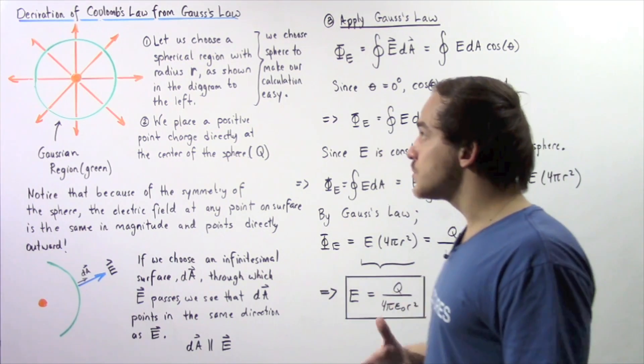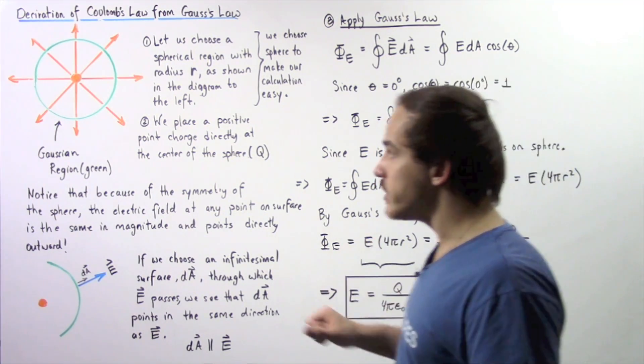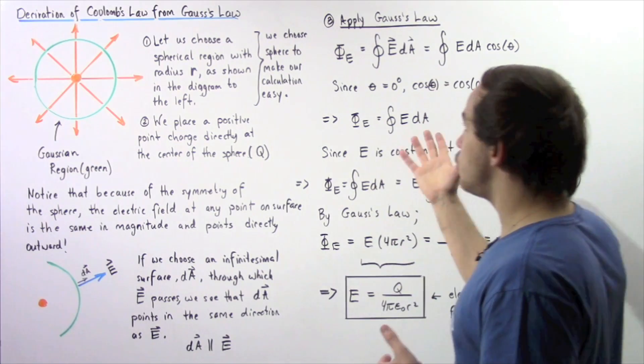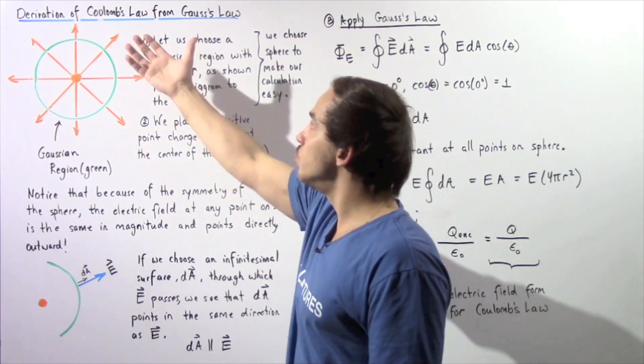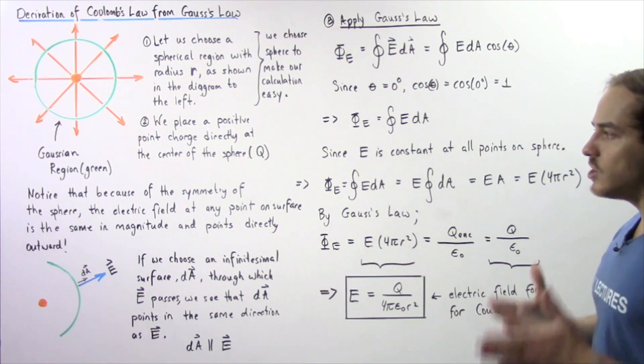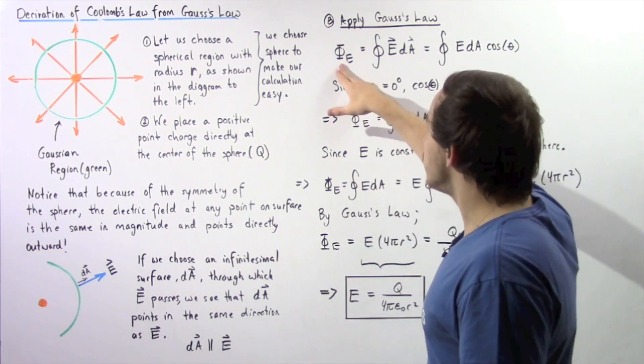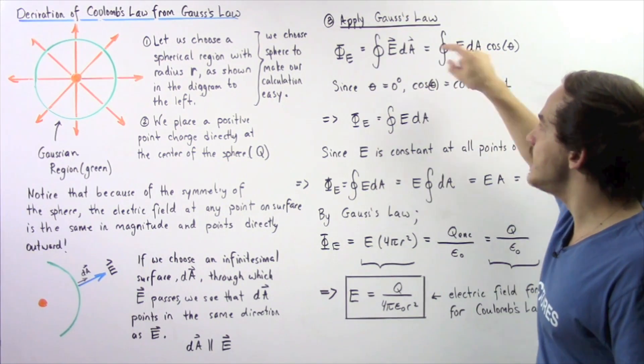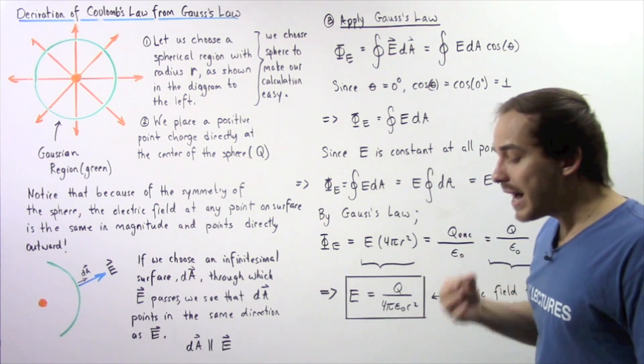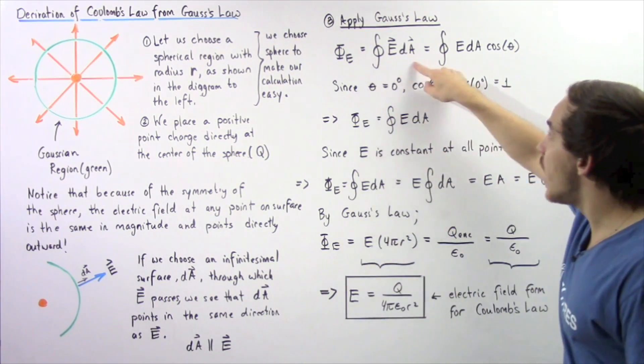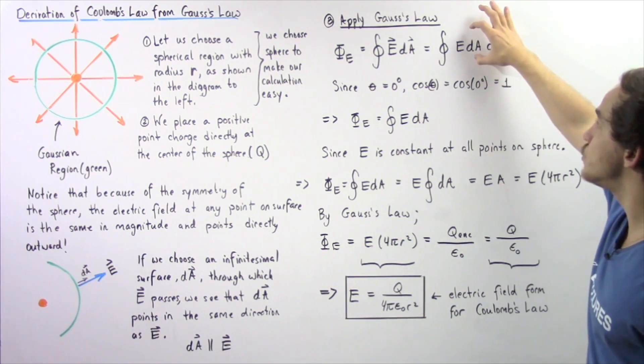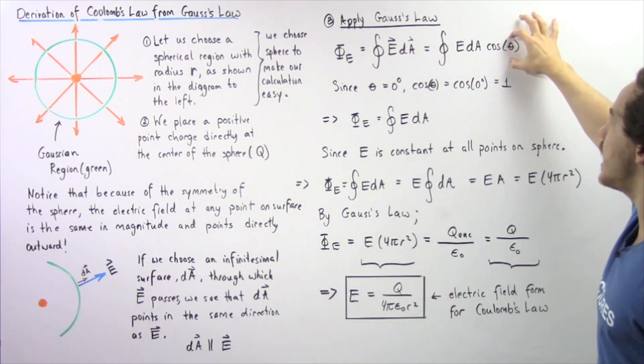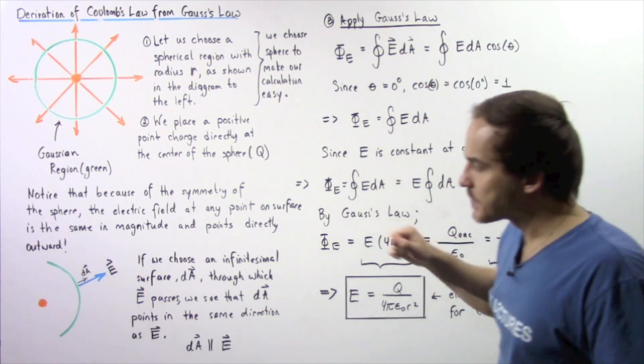Now, let's actually apply Gauss's law. We chose our region known as the Gauss's region, and we place the charge inside. Now, we actually want to use that law to prove to show Coulomb's law. Let's begin by using electric flux. The electric flux is equal to the closed integral of the dot product of our vector E and the vector dA. By definition of dot product, the dot product is equal to the product of the magnitude of E multiplied by the magnitude of dA multiplied by the cosine of the angle theta between these two vectors.